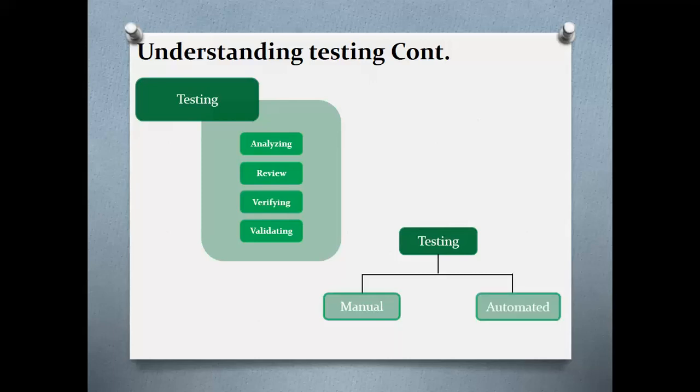Automated testing is the process of performing testing activities with the use of automated tools. Automated testing helps in reducing the testing time, providing accuracy in the test execution. Automated testing can only be done on previously written scripts. Therefore, manual testing should be thoroughly done at least once before using any automated tools.